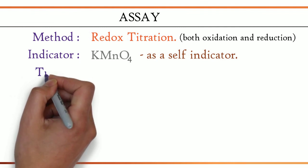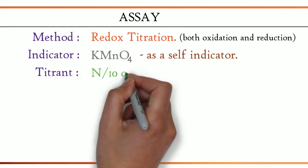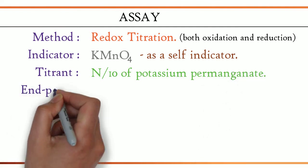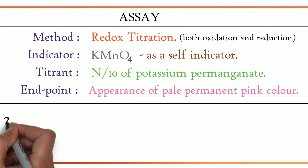That is self-indicator. The titrant used is N/10 of potassium permanganate. The endpoint is appearance of pale permanent pink color. The equation is as follows.